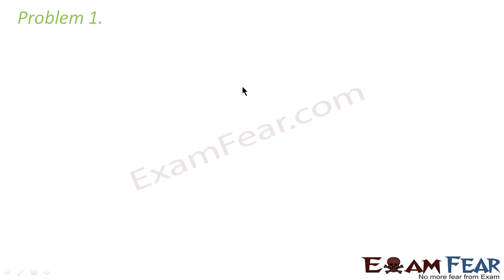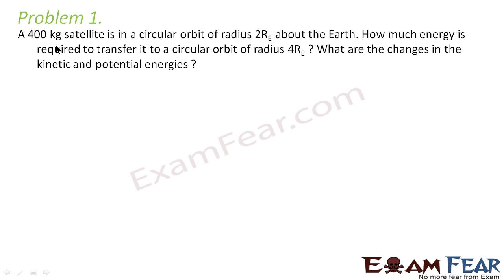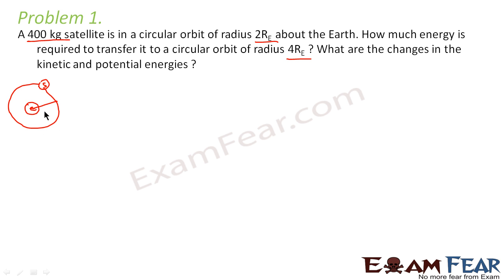Look at problem 1. A 400 kg satellite is in a circular orbit of radius 2RE about the earth. How much energy is required to transfer it to a circular orbit of radius 4RE? At present the satellite is in a circular orbit of radius 2RE, and we want it transferred to an orbit of radius 4RE. So how much energy is required to make it move in an orbit of radius 4RE?